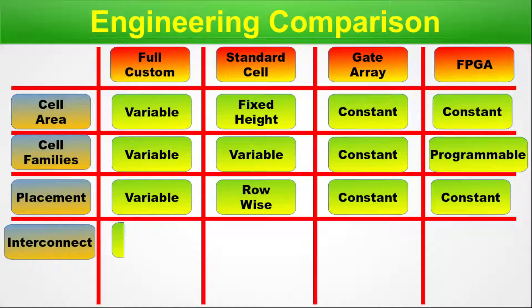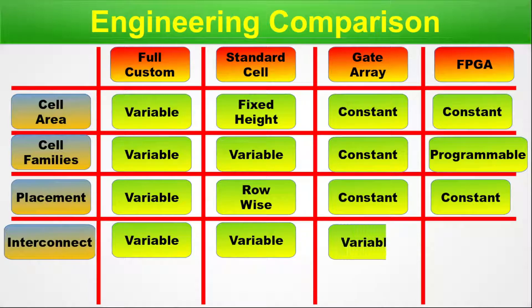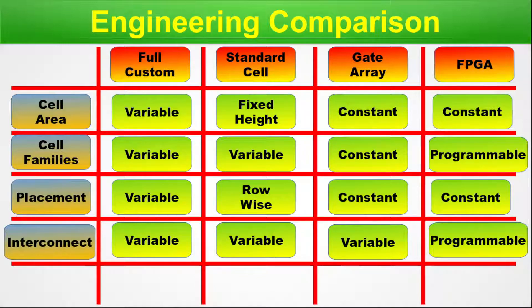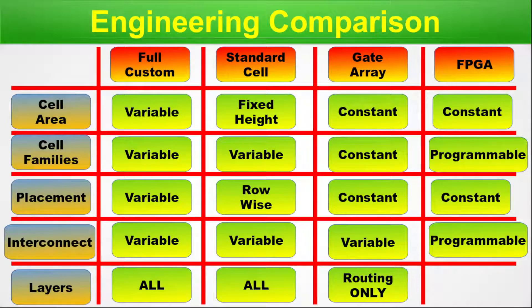Next parameter: layers. Full custom has all layers. Standard cell also has all layers. Gate array has routing layers only — because the cell fabrication is already done, only the routing layer is available for use. FPGA has none — because you have to program it. This completes the engineering comparison.